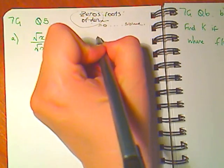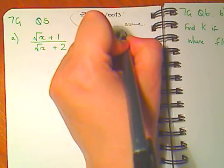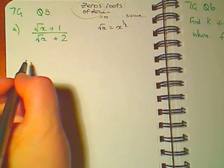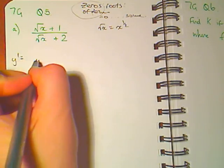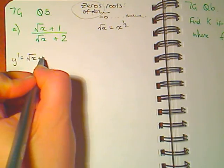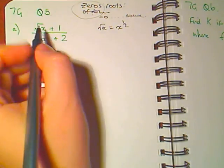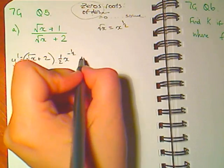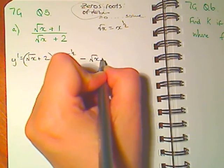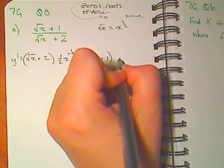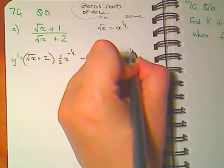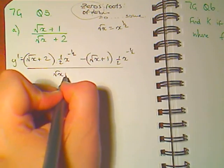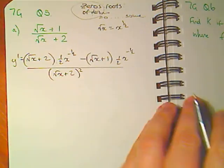So, remembering that the square root of x is x to the half. The derivative is the bottom times the derivative of the top minus the top times the derivative of the bottom, all over the bottom squared.